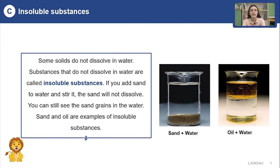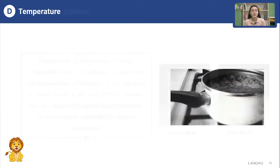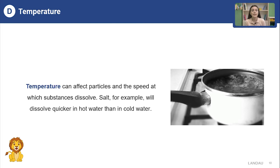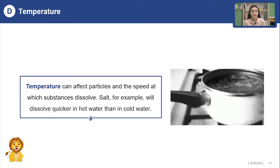These substances cannot be dissolved in water, so they are called insoluble substances. Temperature plays an important role in dissolving substances. Temperature can affect particles and the speed at which substances dissolve. Salt, for example, can dissolve quicker in hot water than in cold water.